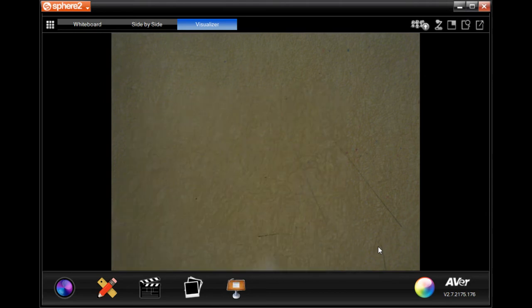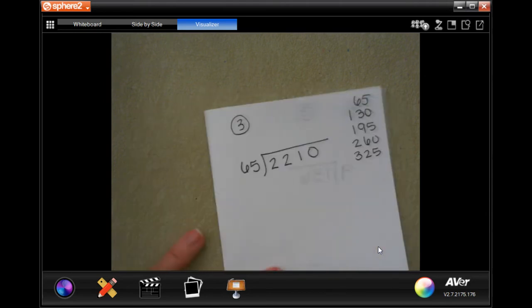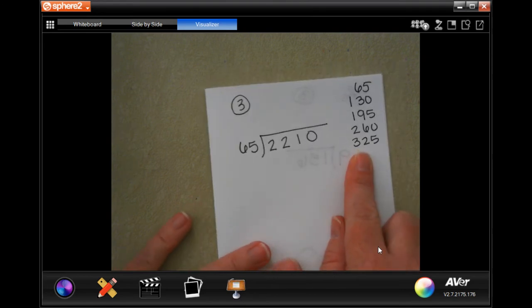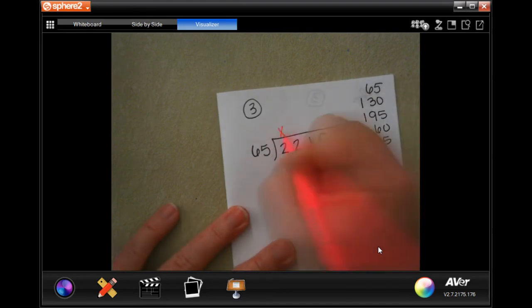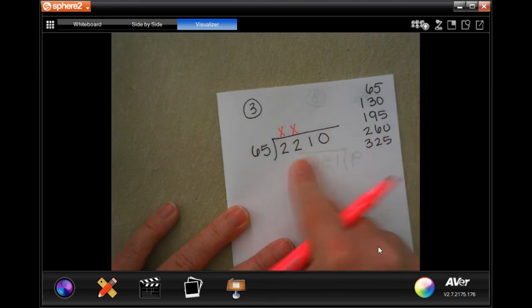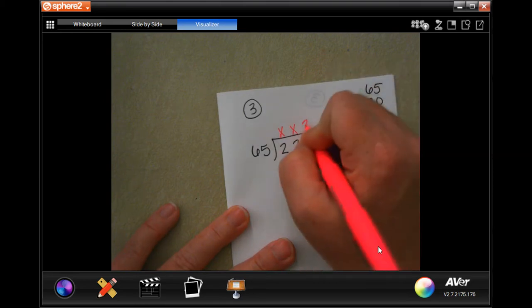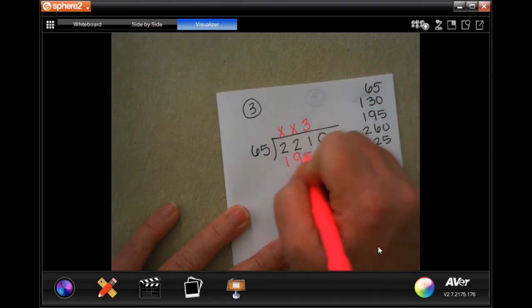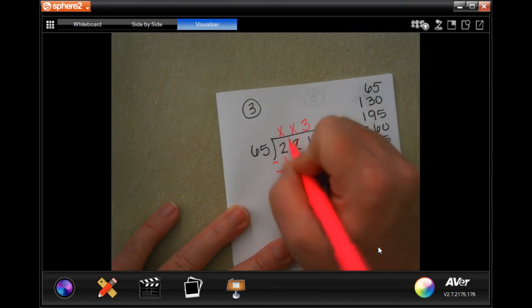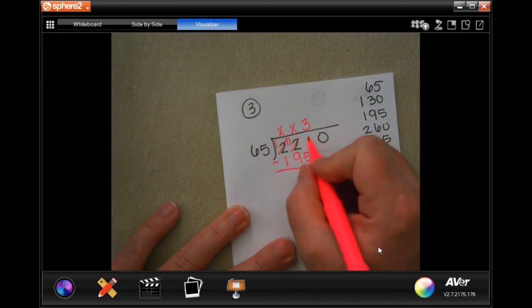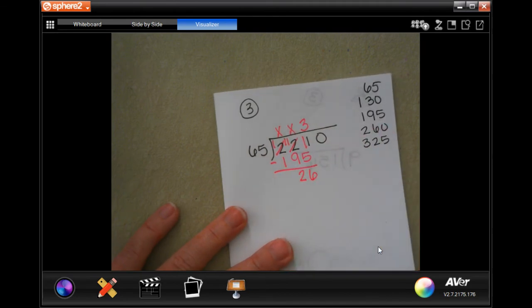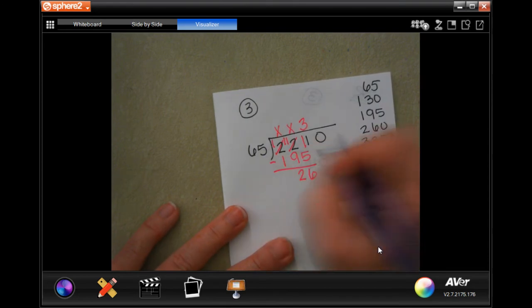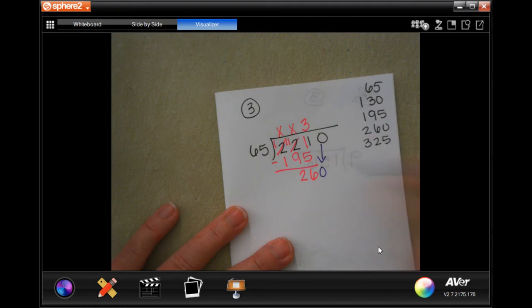Ready for number 3? Let's do it. Number 3, I wrote down multiples of 65 over here. Hopefully, I don't have to go past those, so I'm going to start. 65 is not going to go into 2, placeholders. It's not going to go into 22, placeholders. It will go into 221. It looks like the closest we're going to get is 195. So, 3, 195. Do some borrowing.